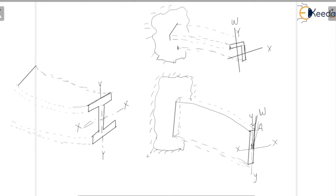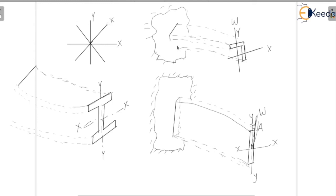For different sections like channel and angle sections, we need to consider how the axes will be positioned and shifted relative to the original centroidal X-Y axes during bending. If the initial axes are X and Y, after bending there may be a rotation, giving new axes X-dash and Y-dash. This axis transformation from X,Y to X',Y' will be covered in the next class. That concludes the concept of unsymmetrical bending — hope it is clear. Thank you.